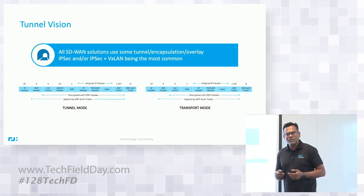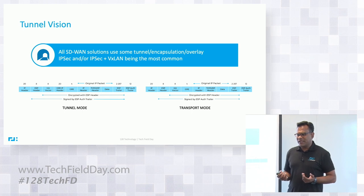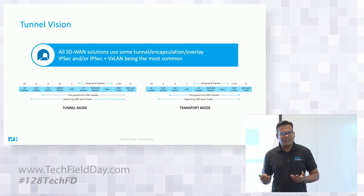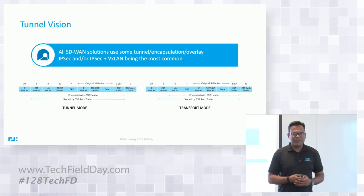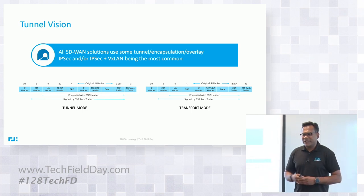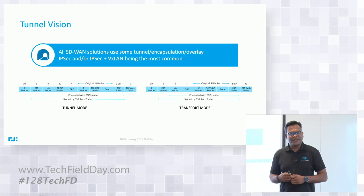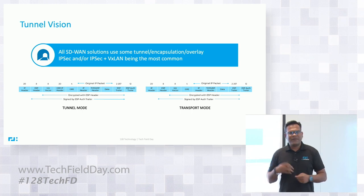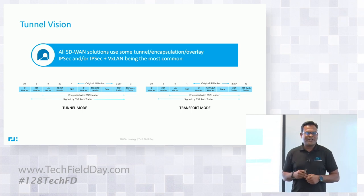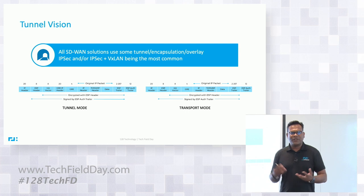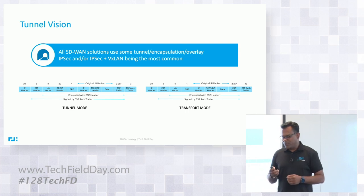How much overhead depends on the size of the packets. If they're voice packets, you're adding almost 100% overhead. If they're jumbo frames or 1500-byte packets, then maybe 10–15%. If they're iMix-style packets, maybe 30% to 40%, depending on the type of packet you have.